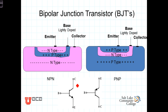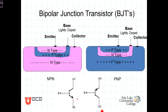Since conventional current flows from a higher voltage to a lower voltage, the NPN transistor is typically drawn with the collector up and the emitter down, so conventional current flows from top to bottom. Conversely, the PNP transistor is typically drawn with the emitter up and the collector at the bottom. In both instances, conventional current flow flows in the direction of the arrowhead, from the top to the bottom, from the higher voltage to the lower voltage.